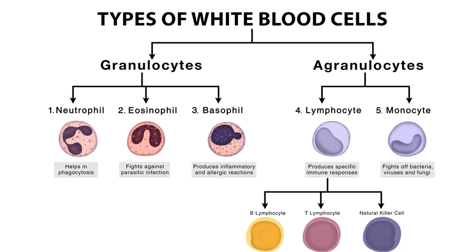In some disorders all white blood cells are affected, but others only affect one type. There are five major types: neutrophils, which predominantly fight bacterial infections; lymphocytes, which predominantly fight viral infections; monocytes, which predominantly fight fungal infections; eosinophils, which predominantly fight parasitic infections and are involved in allergic reactions; and basophils, which are involved in inflammatory reactions.